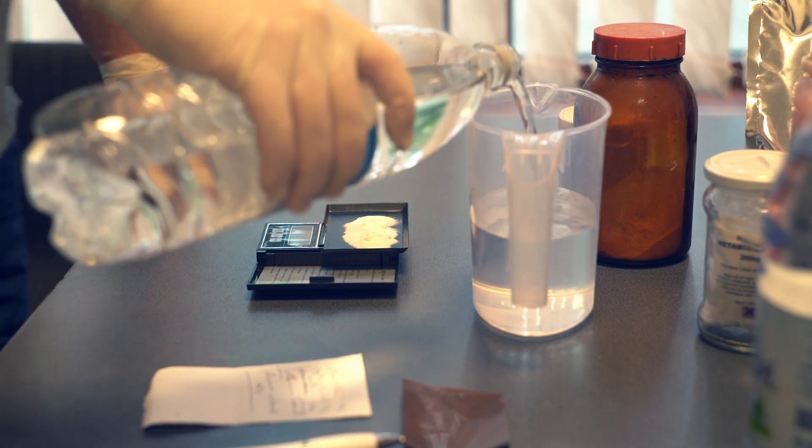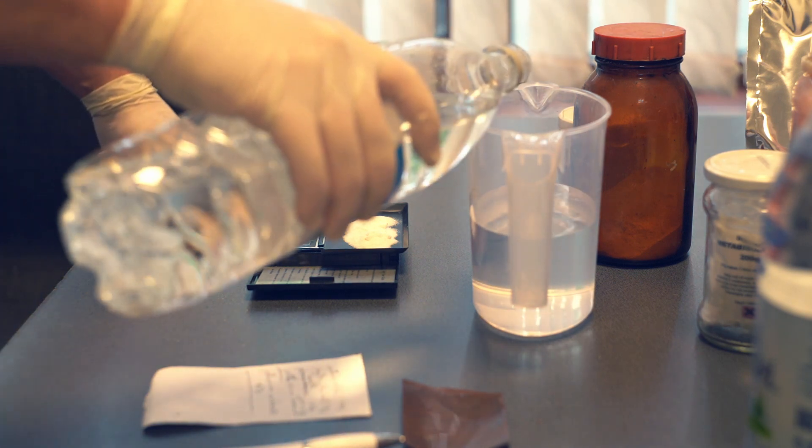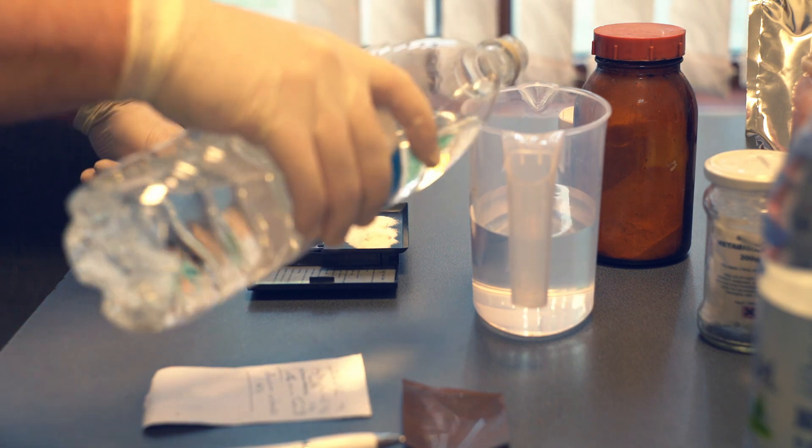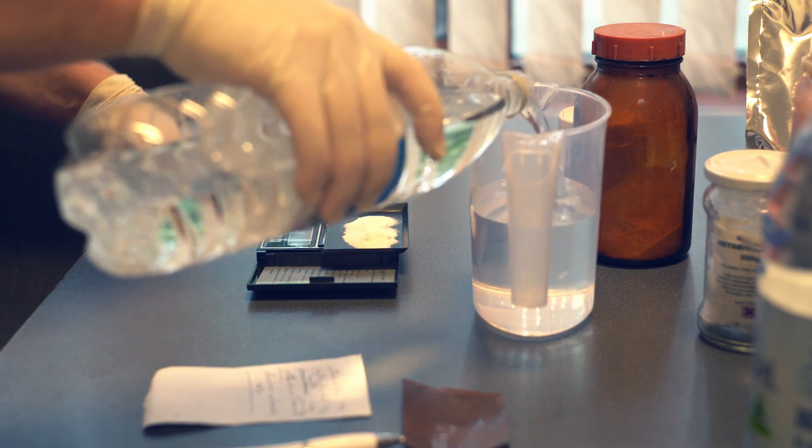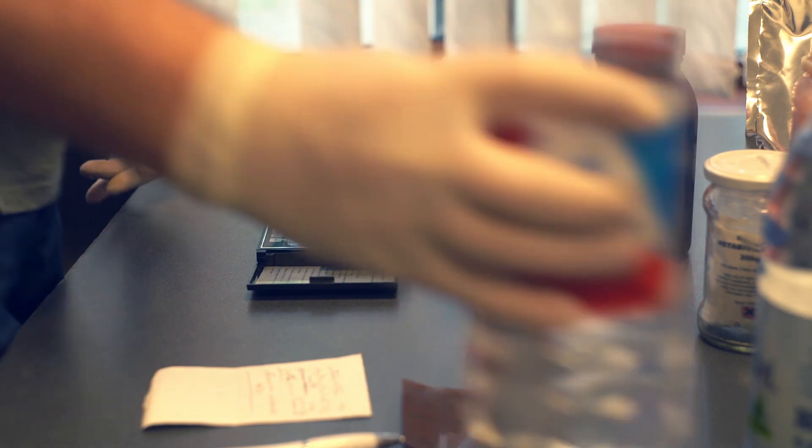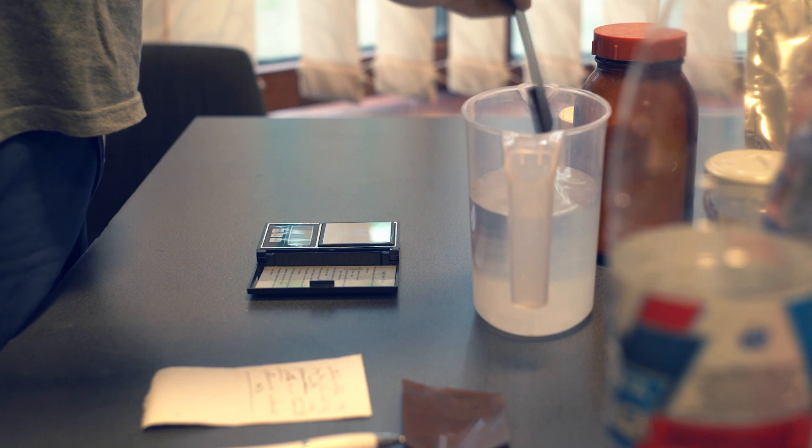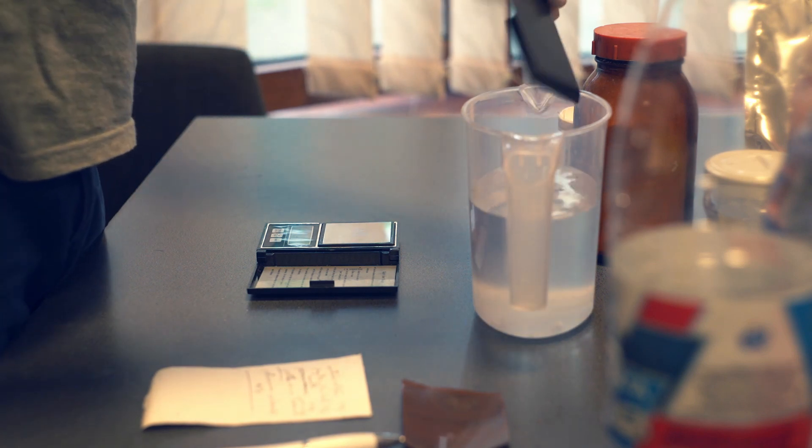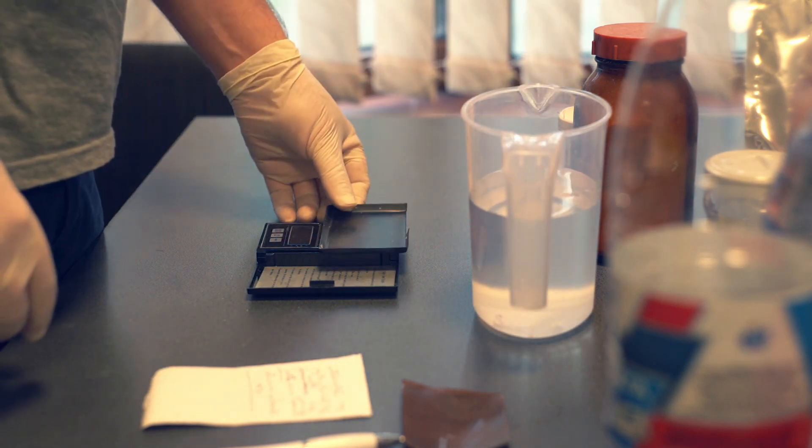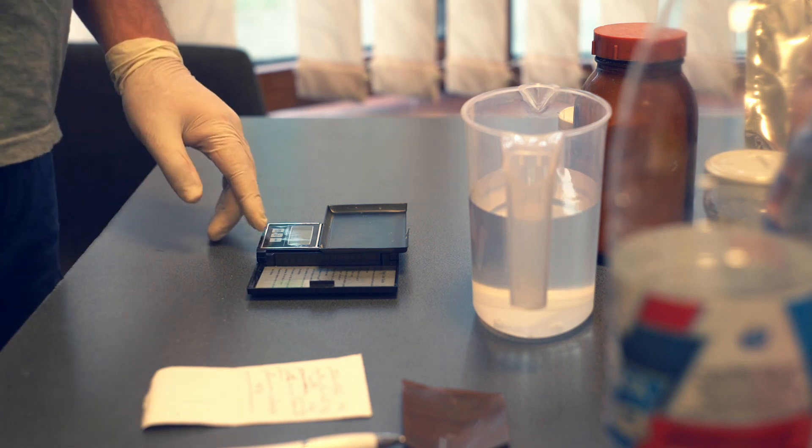I mean it, don't start without wearing gloves. Pyrocatechol is pretty nasty shit. Back to chemicals. The PyroCat M formula requires for start 10 grams of sodium metabisulfite dissolved in 750 milliliters distilled water. Stir until fully dissolved.